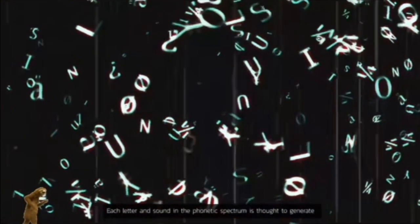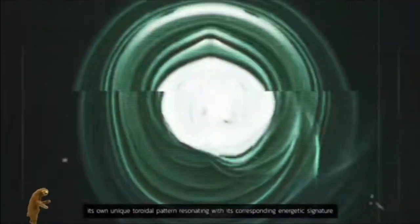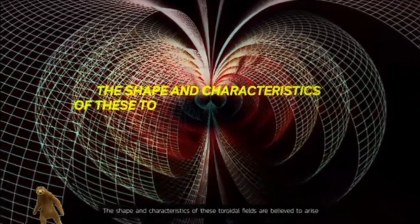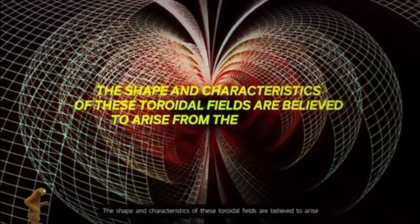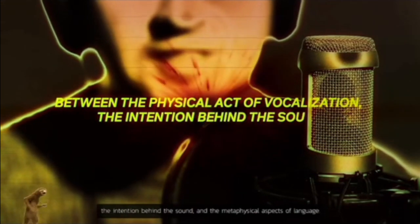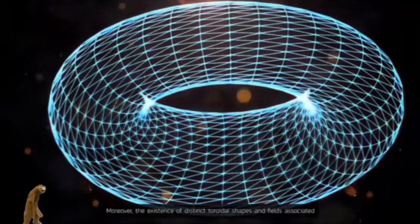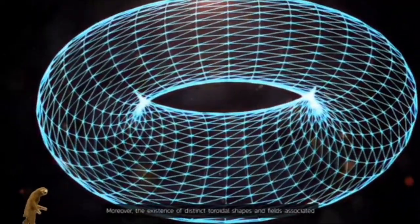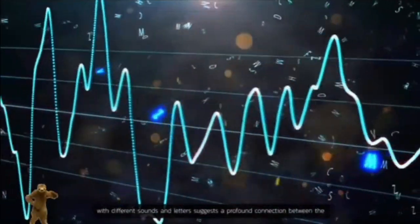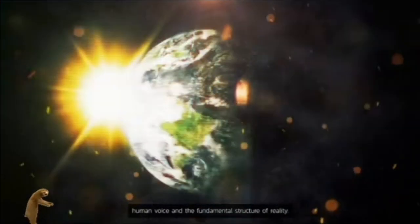Each letter and sound in the phonetic spectrum is thought to generate its own unique toroidal pattern, resonating with its corresponding energetic signature. The shape and characteristics of these toroidal fields are believed to arise from the interplay between the physical acts of vocalization, the intention behind the sound, and the metaphysical aspects of language. Moreover, the existence of distinct toroidal shapes and fields associated with different sounds and letters suggests a profound connection between the human voice and the fundamental structure of reality.